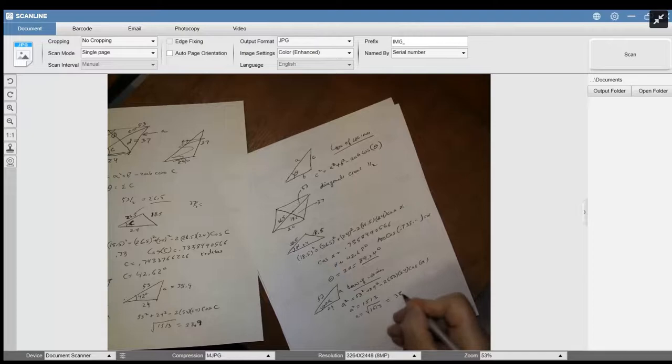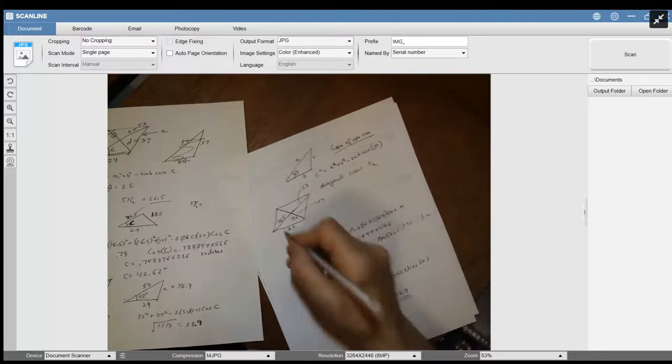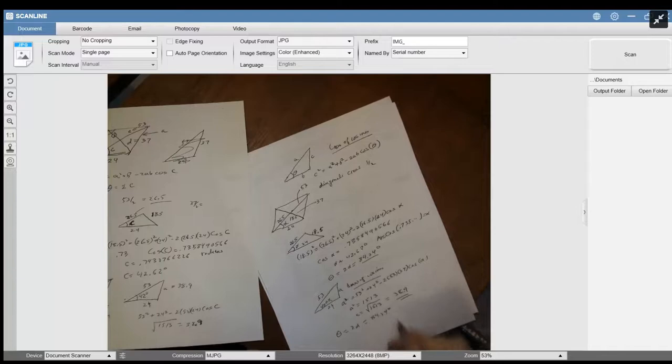So you've got A equal to 38.9. Now you've got to find theta. Well, theta is equal to 2 times alpha because alpha was just this part here. You see that's alpha there. So 2 times alpha is about 84.24. I said that already.